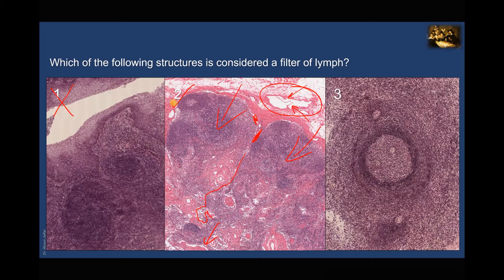The correct answer is two, but let's confirm and look at slide three. Slide three shows a lymphatic nodule with a germinal center — it might give the impression of a lymph node, but when you look closely, you will find that there are arteries in the lymphoid aggregate. So this is the white pulp of a spleen. This is not a feature of a lymph node, but a feature of the white pulp of the spleen. The spleen does act as a filter, but a filter for blood, not a filter of lymph.